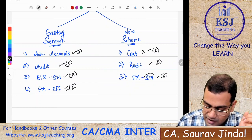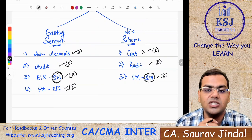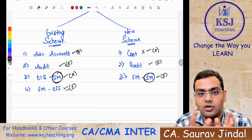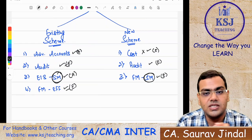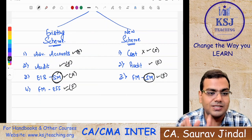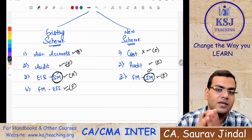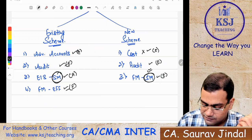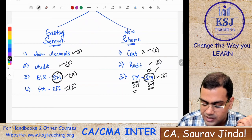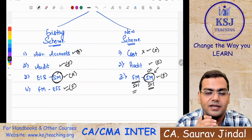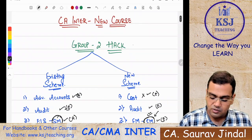But will this really work? Under the new scheme, you haven't yet cleared the SM paper — Strategic Management and Financial Management. Everything revolves around this paper. You are done with Audit, you are done with FM, but what about Strategic Management? How can the CA Institute consider you a CA Finalist without clearing one paper? Even if it is 50 percent of a combined paper, you have cleared only 50 percent and the remaining 50 percent is yet to be cleared. So according to me, this Group 2 hack will not work.